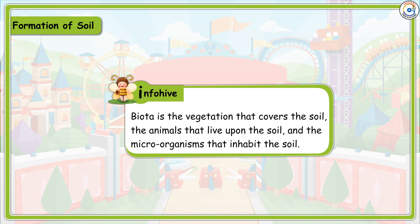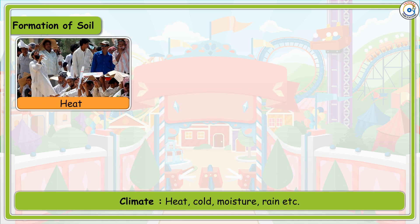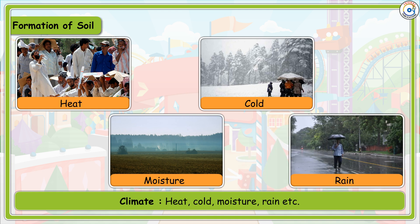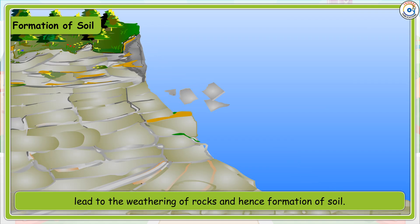Biota is the vegetation that covers the soil, the animals that live upon the soil, and the microorganisms that inhabit the soil. Climate factors such as heat, cold, moisture, rain, etc. lead to the weathering of rocks and hence formation of soil.